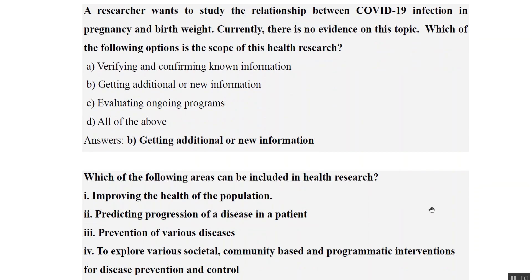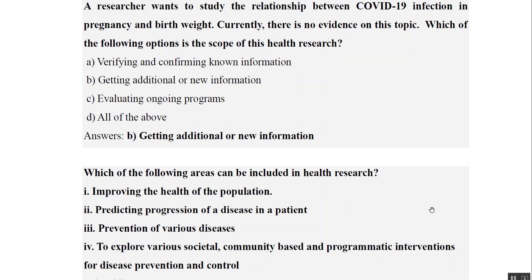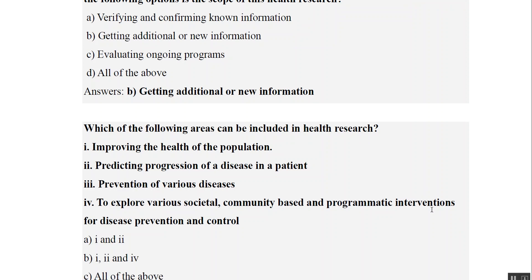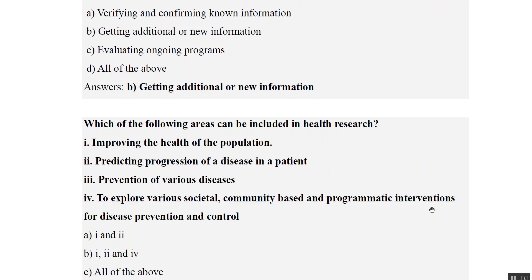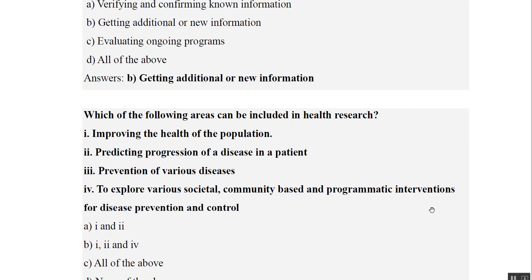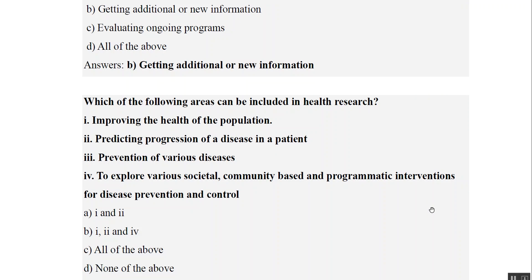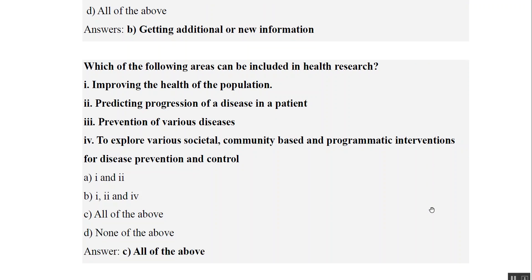Third question: which of the following areas can be included in health research — improving health of population, predicting progression of disease in patients, prevention of various diseases, and exploring societal, community-based, or programmatic interventions for disease prevention and control? All four are included in the scope of health research, so the answer is option C — all of the above.